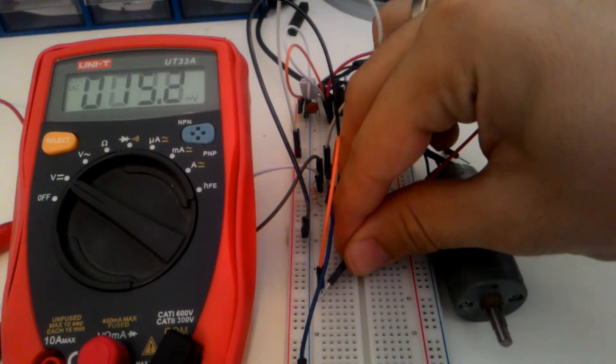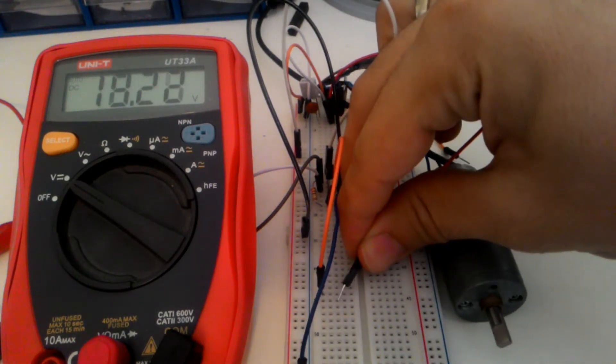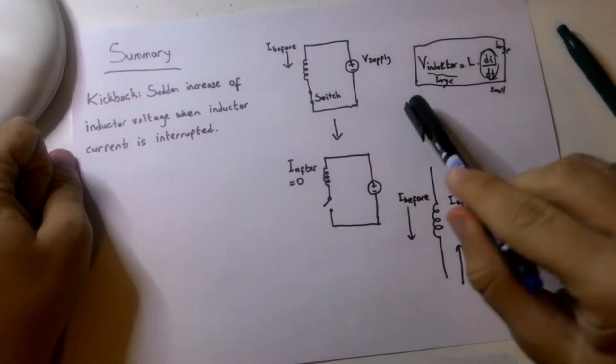In the first part of this series, we made a short introduction on inductive kickback and explained it using the voltage equation of an inductor.